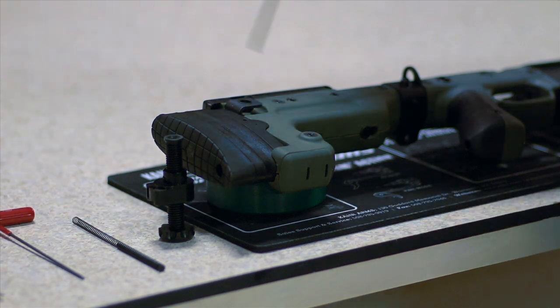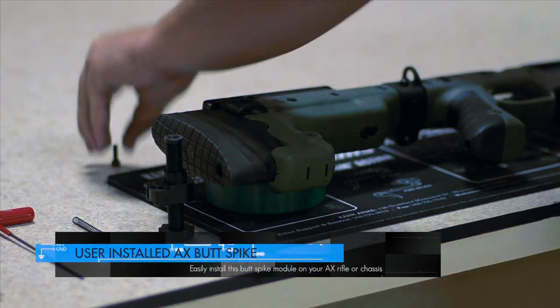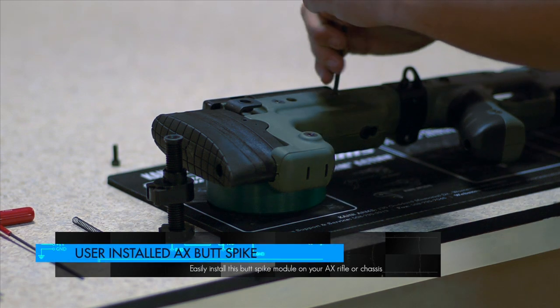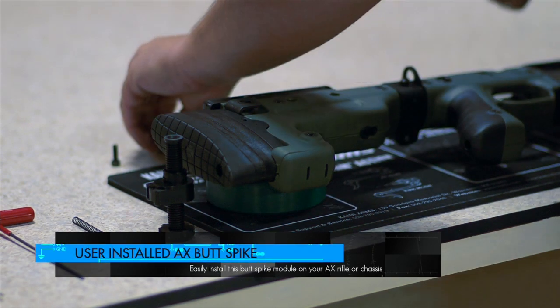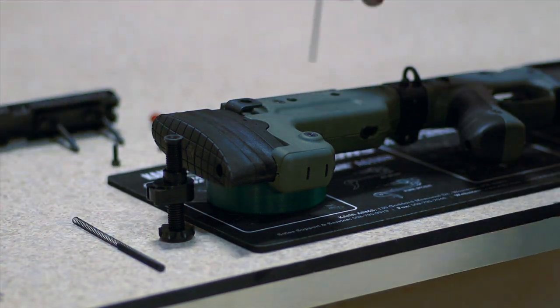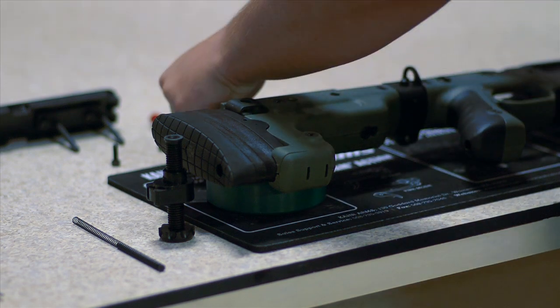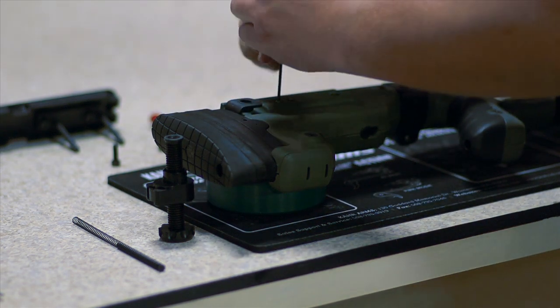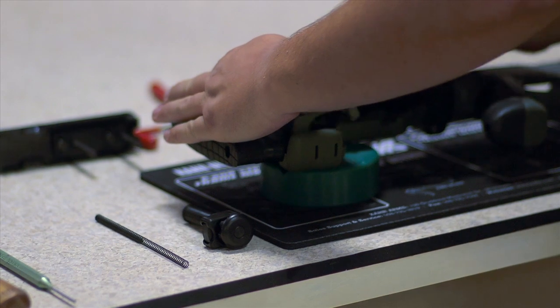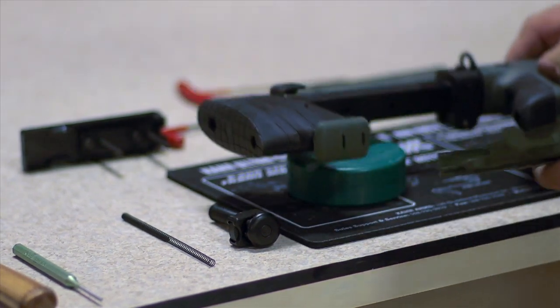To start off, take the cheek piece off. Next will be the skins, using the two and a half. Remove the skins.